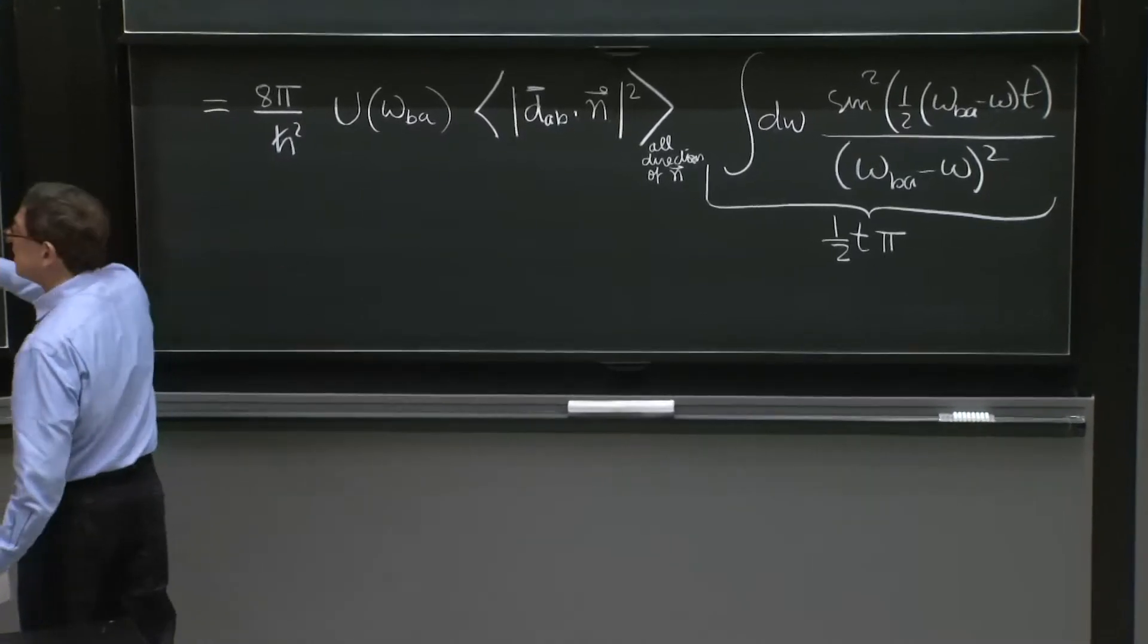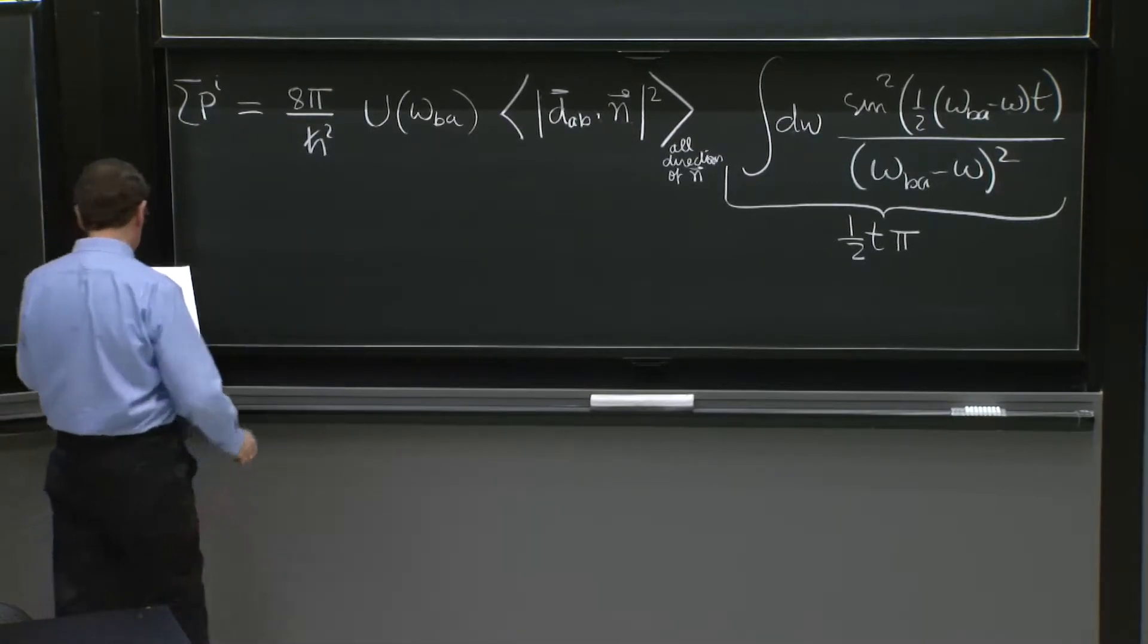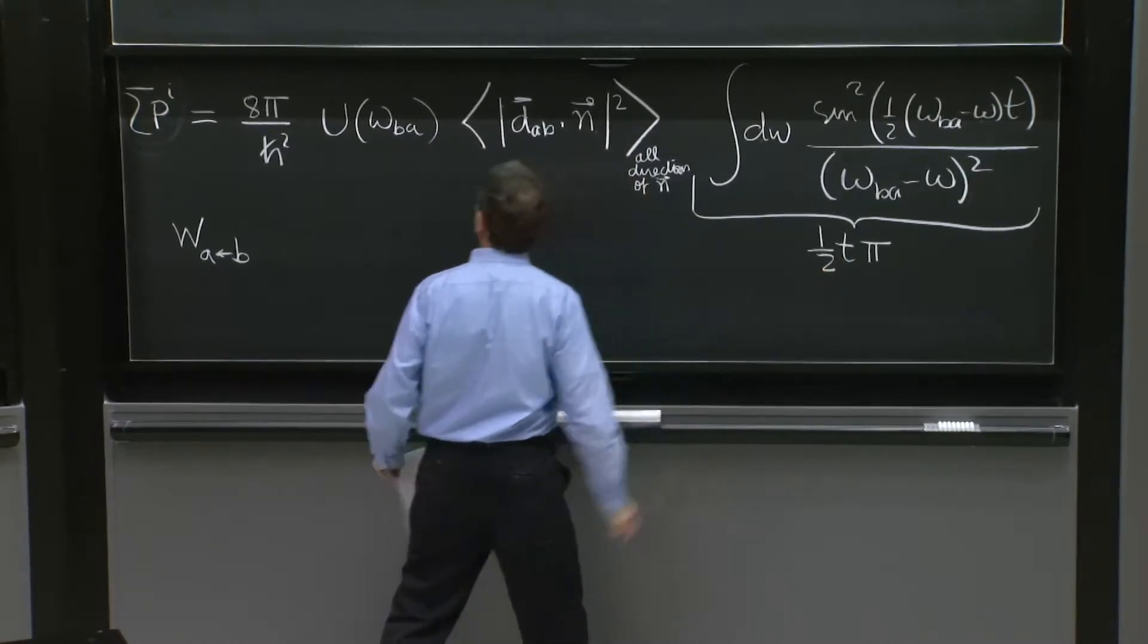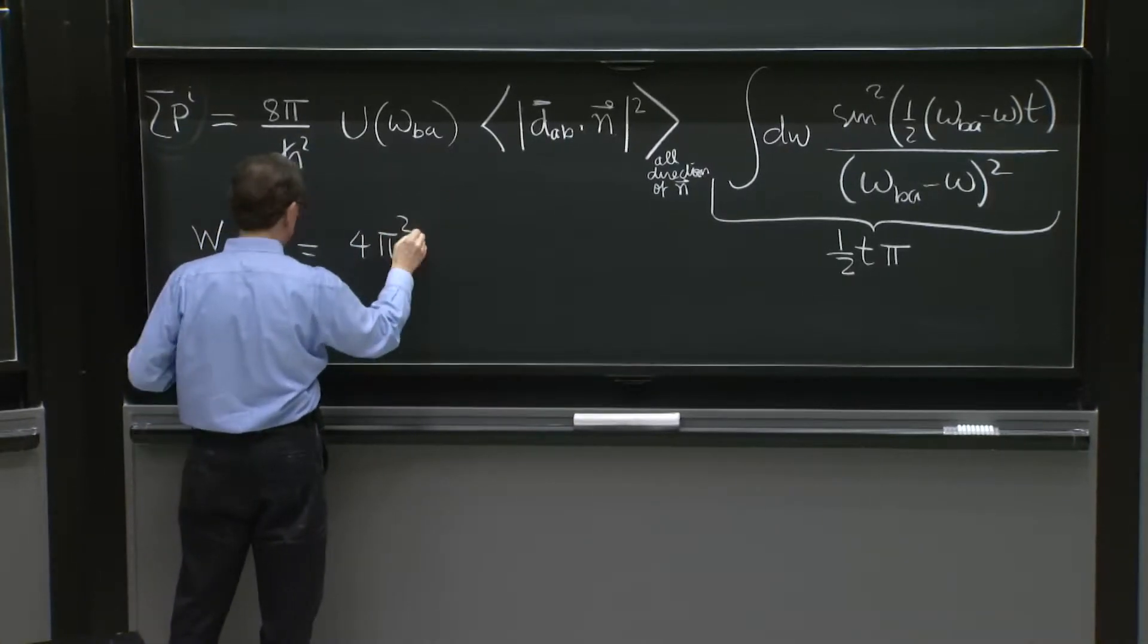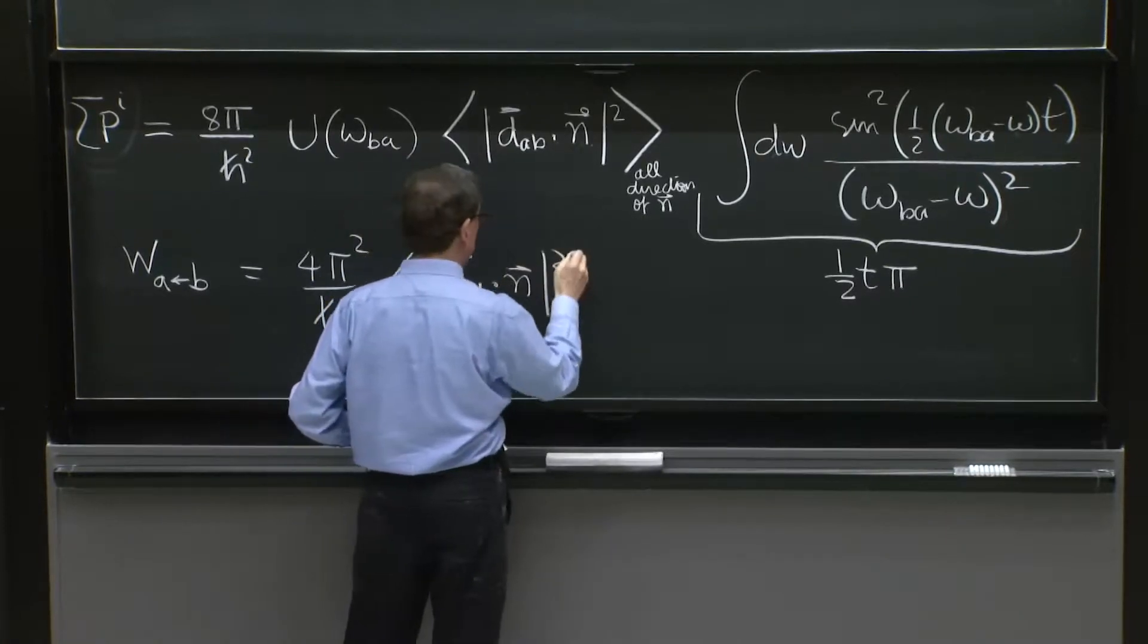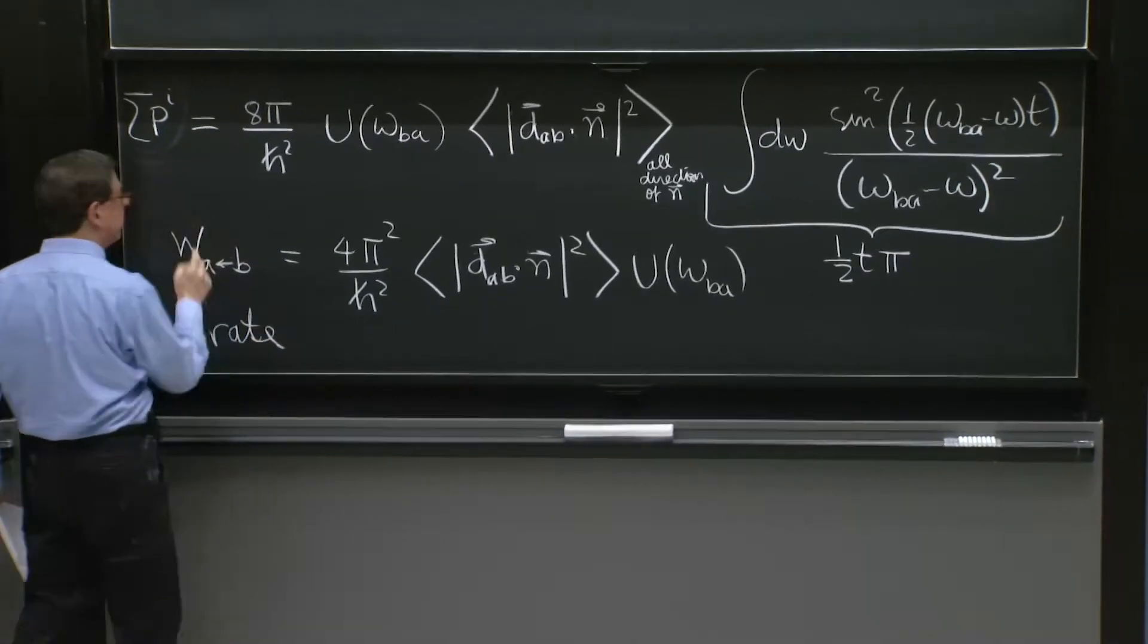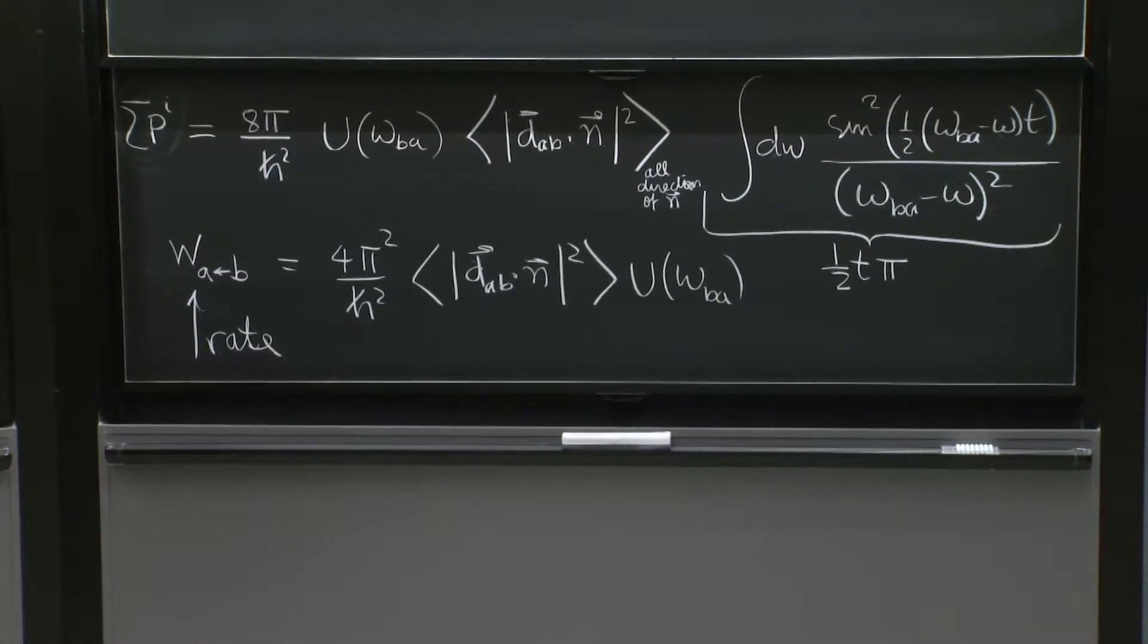We have this is the sum of p's. And there's this t there. So the transition rate, w, from b to a, is this probability divided by time. So it's going to cancel this time. Then the 2 is going to give a 4. The π is going to give a π squared. There's going to be an h squared. There's going to be this factor, d_ab dot n squared. And there's going to be the u of omega ba. So this is going to be the rate. We've divided by t, the previous result. And there we have it. We're almost finished with the calculation. The rate is here.